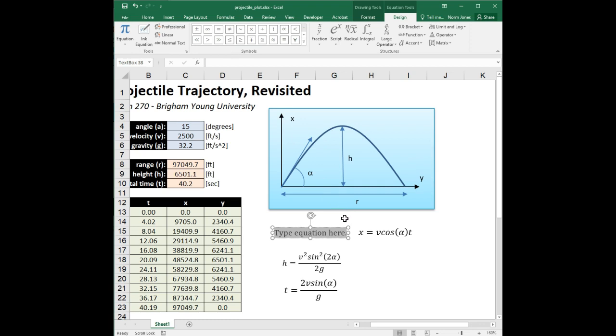There's a new one of these temporary tabs that pop up, and now we can start doing our equation. Again, we're going to do R equals v squared sine 2 alpha over G. So I just start typing R equals.